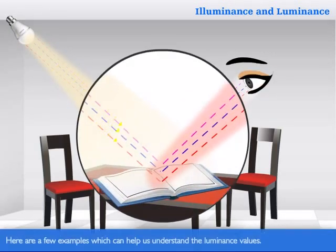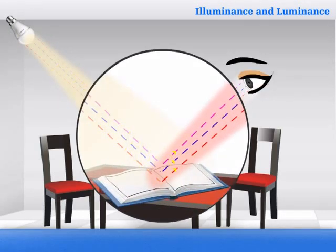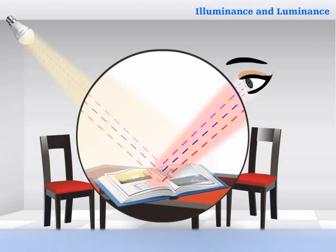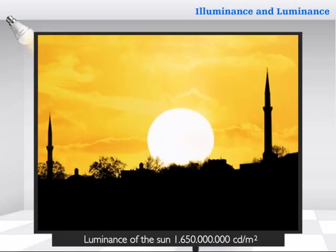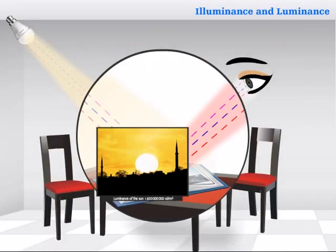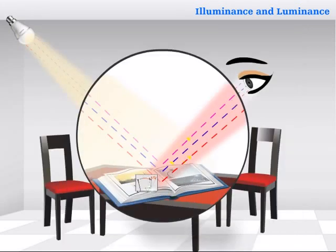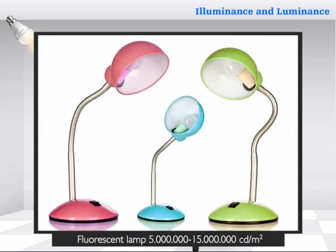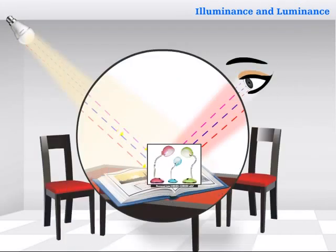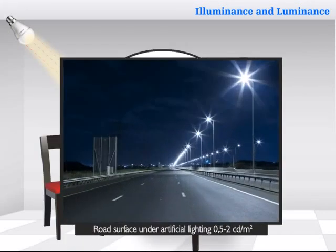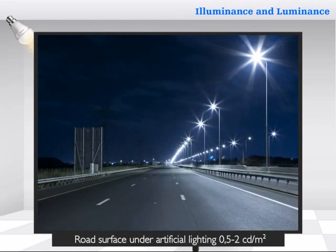Here are a few examples which can help us understand the Luminance values: the luminance of the sun, the filament of a clear incandescent lamp, a fluorescent lamp, and a road surface under artificial lighting.